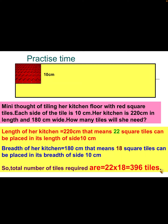Practice question: Minnie thought of tiling her kitchen floor with red square tiles. Each side of the tile is 10 cm. Her kitchen is 220 cm in length and 180 cm wide. How many tiles will she need? Solution: 220 ÷ 10 = 22 tiles along the length; 180 ÷ 10 = 18 tiles along the breadth. Total tiles required = 22 × 18 = 396 tiles.